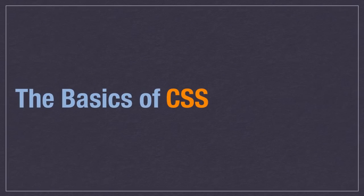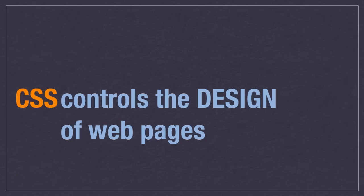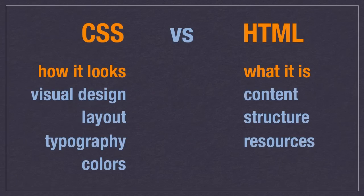Let's start with the basics of CSS. What is it? It controls the design of your web page. Comparing it to HTML, CSS controls how it looks — the visual design, the layout, the typography, and the colors — whereas HTML just marks what things are: the content, the structure of items, and the resources in there like images, audio, CSS files, and JavaScript.